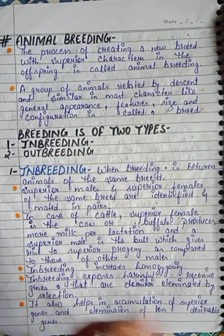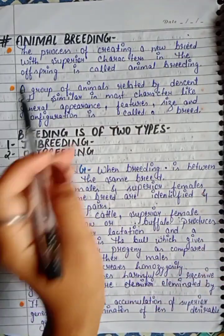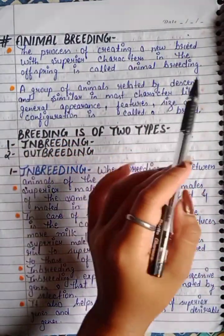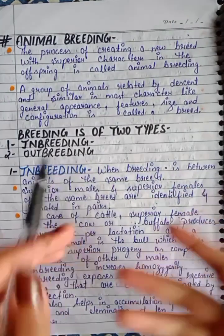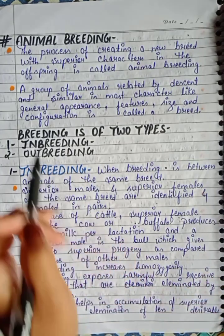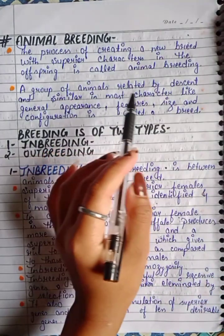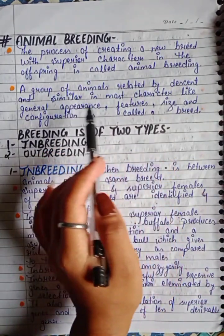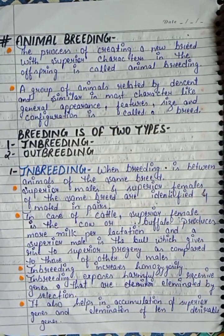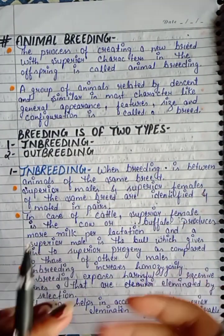Animal breeding: the process of creating a new breed with superior characters in the offspring is called animal breeding. A breed is a group of animals related by descent and similar in most characters like general appearance, features, size, and configuration.